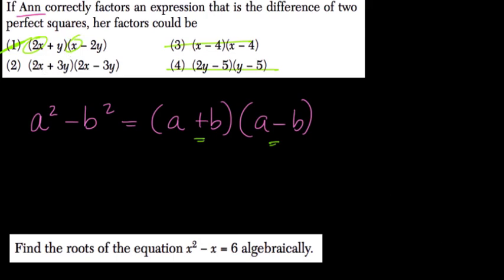So the only one that actually follows this form is choice two, where we have 2x and 2x, 3y and 3y, and plus and minus. If that happens, and you distribute, you will get the difference of two perfect squares.